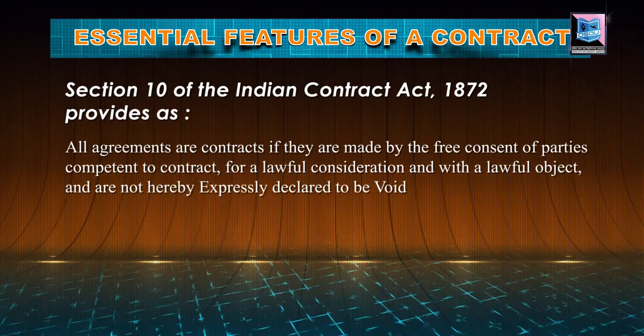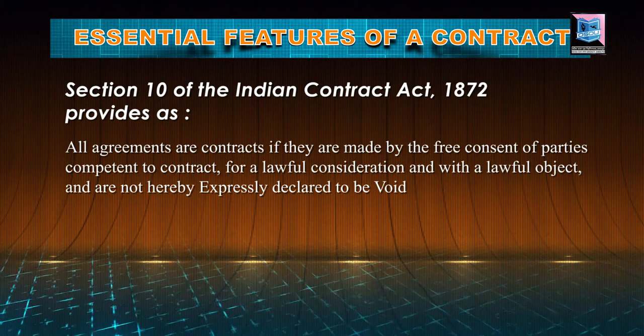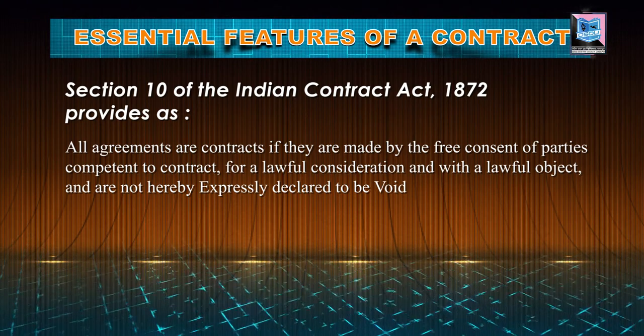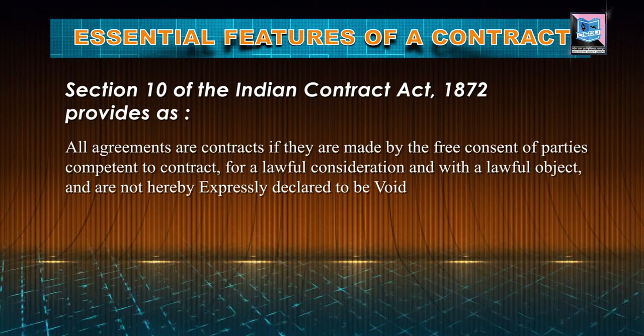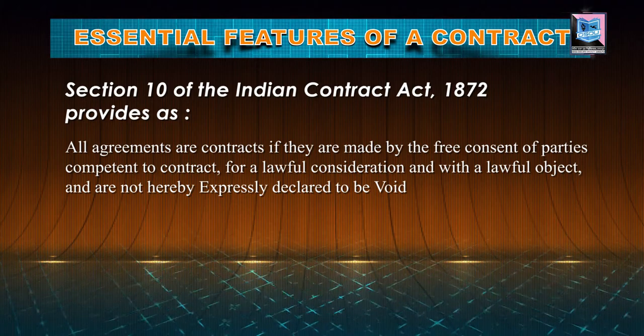Section 10 of Indian Contract Act 1872 provides that all agreements are contracts if they are made with free consent of parties, competent to contract, for a lawful consideration and with a lawful object, and are not hereby expressly declared to be void. All these features are very important in regard to a contract, and to become a contract, the agreement must compose of all these essential features. Now, just analyzing all these features.